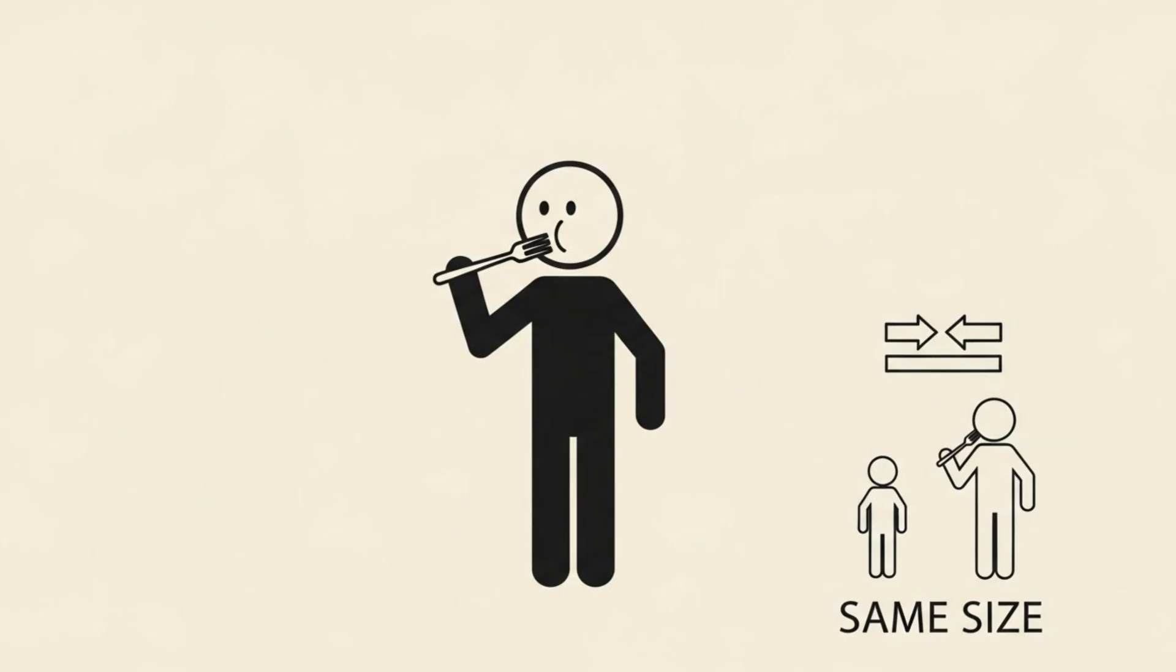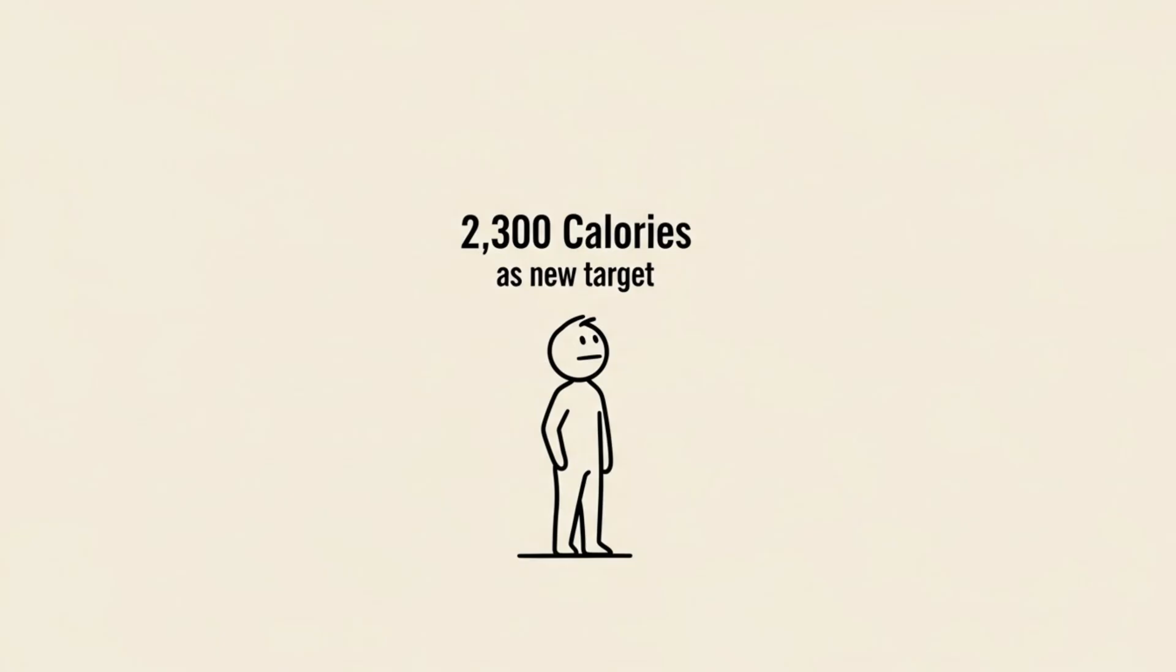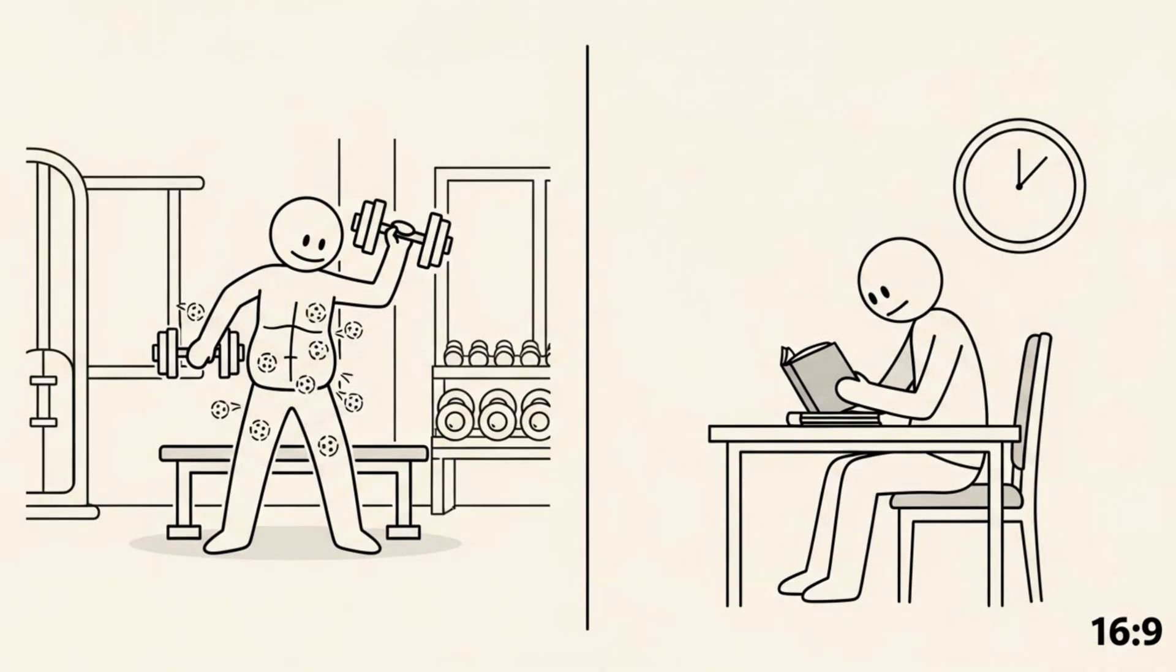That is what you eat to stay exactly the same. To lose fat without losing your mind, you want to subtract about 20% from that number. So, in this example, you would aim for roughly 2,300 calories a day. This is your sweet spot. It is enough food to have energy for the gym and focus at work, but low enough to force your body to tap into its fat stores for fuel.